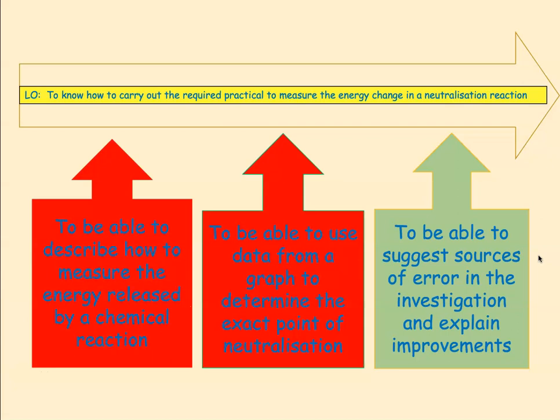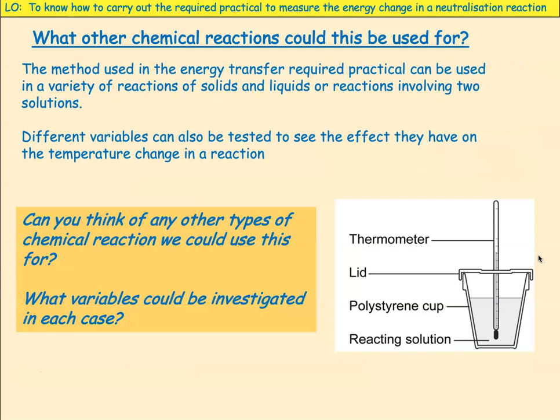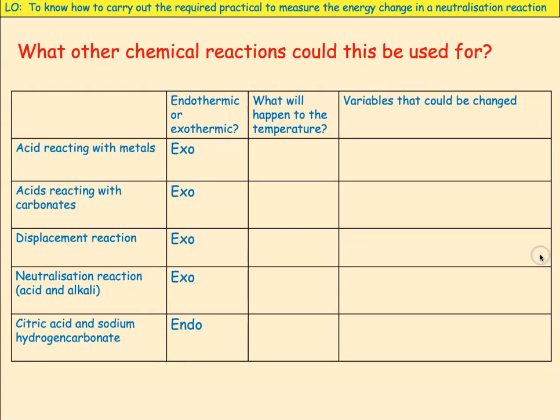We're going to look at sources of error in the investigation and try to suggest improvements. We could carry this out with other types of reaction — exothermic or endothermic. The AQA could ask you to do this, so it may not be hydrochloric acid and sodium hydroxide; they could give you another type of reaction.